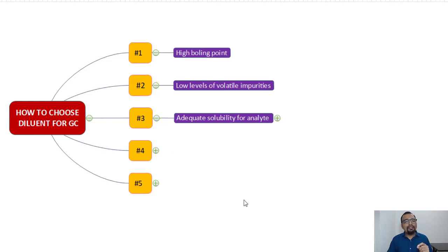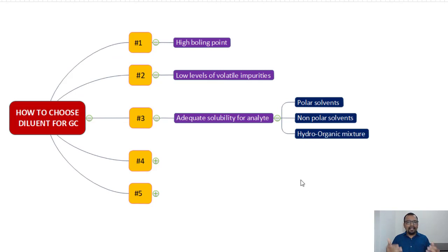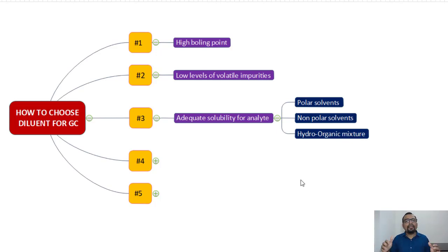The third point is adequate solubility for the analyte. If your analyte is polar, you can go with a polar solvent like water, DMSO, or benzyl alcohol. If your analyte is non-polar, you can go with a non-polar diluent like hexane, heptane, or dichloromethane. Remember the 'like dissolves like' rule: a polar analyte is soluble in a polar diluent and a non-polar analyte is soluble in a non-polar diluent.